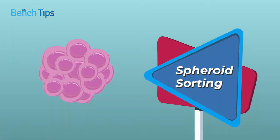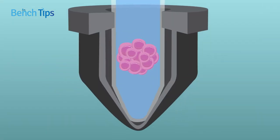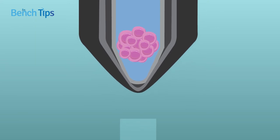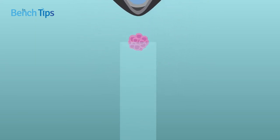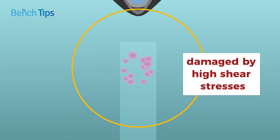Spheroid sorting is also problematic. Not only are spheroids frequently too large to pass through the nozzle, but when they do make it into the cell sorter, they are easily damaged by the higher shear stresses required to isolate them.